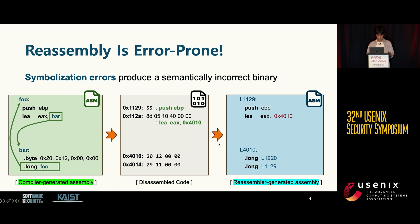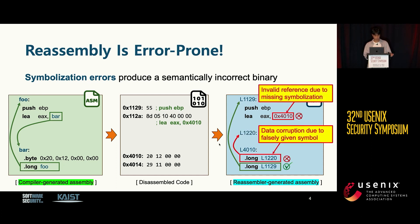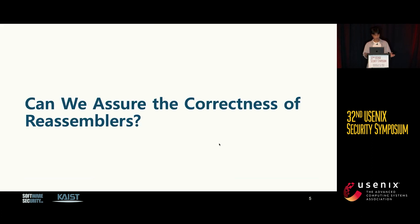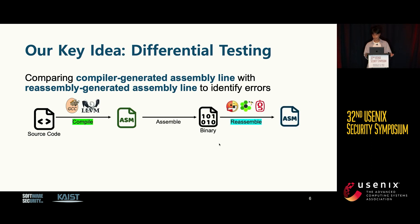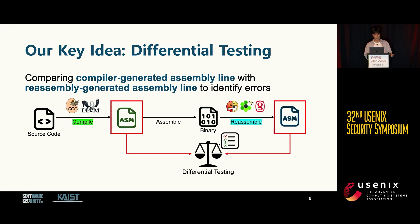So our question is: can we assure the correctness of reassembly tools? Our idea is to use differential testing to find correctness problems. Specifically, we can compare compiler-generated assembly code with reassembler-generated assembly code to identify errors. However, this approach comes with several challenges.